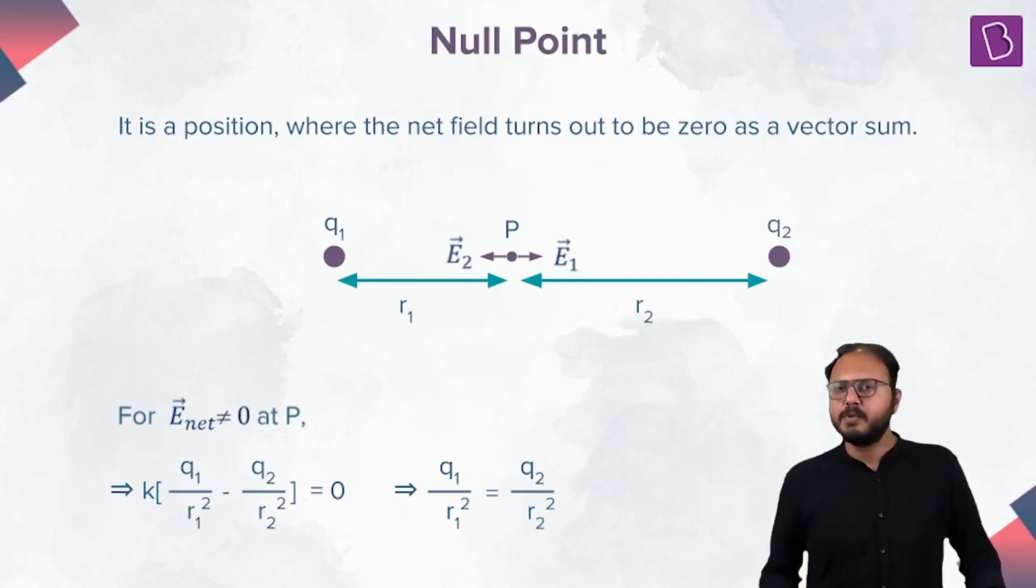But by principle of superposition, the net electric field is the vector sum of the field due to Q1, that is E1, and the field due to Q2, that is E2.